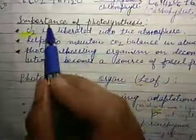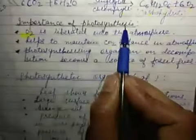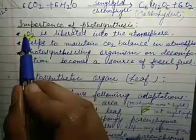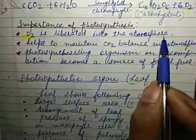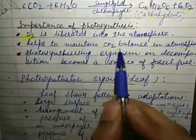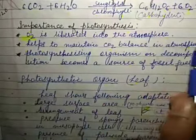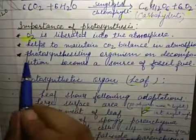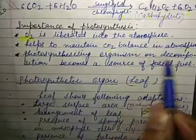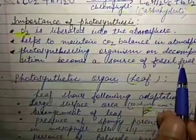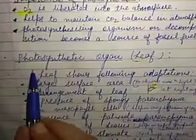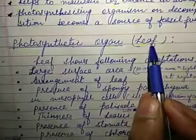Next topic. Importance of photosynthesis. Photosynthesis is only a natural process in which oxygen is liberated into the atmosphere. Second point: it helps to maintain carbon dioxide balance in the atmosphere. The third point: photosynthesizing organism or decomposition becomes a source of fossil fuel. Next topic: photosynthetic organs, that is leaf.